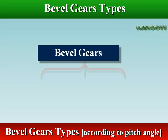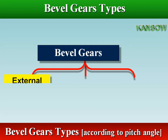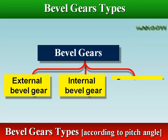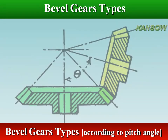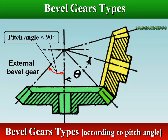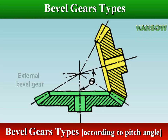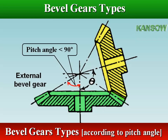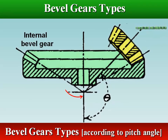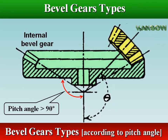According to pitch angle, bevel gears are classified as external, internal, and crown gear. The most familiar kinds of bevel gears have pitch angles of less than 90 degrees and therefore are cone-shaped. This type is called external because the gear teeth point outward. Bevel gears that have pitch angles of greater than 90 degrees have teeth that point inward and are called internal bevel gears.